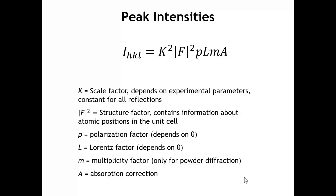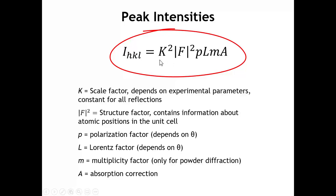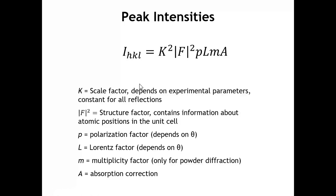Mathematically, the intensity of each reflection or diffraction peak is given by this formula. Starting with the first term, k squared — k is just a scale factor. What we care about are the relative intensities of the peaks, which ones are strong and which ones are weak. The absolute intensity depends on things like how long you measured, the size of your crystal, and parameters of your instrument. This scale factor k is the same for every diffraction peak in the pattern.